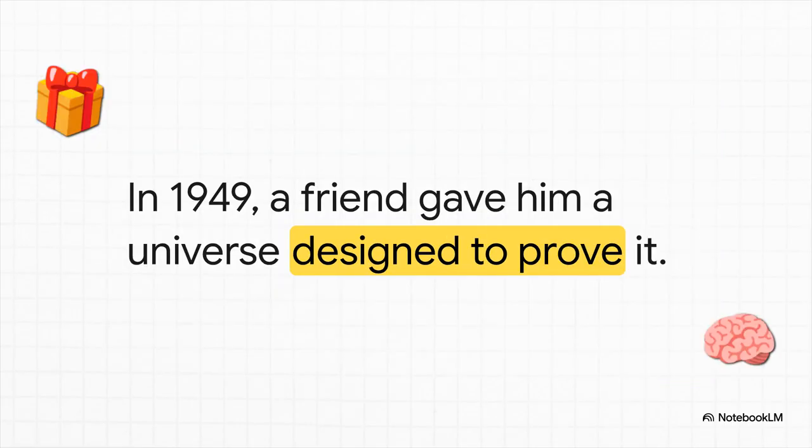So picture this. For Einstein's 70th birthday, his best friend doesn't just buy him a cake. Nope. He gives him mathematical proof. He gifts him an entire logically consistent universe built using Einstein's own theory that was designed to completely shatter everything we think we know about time.